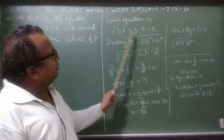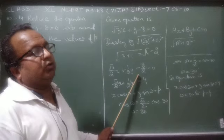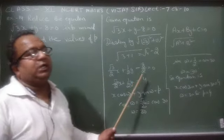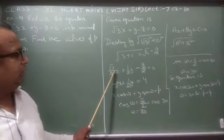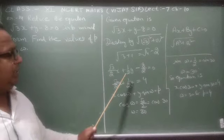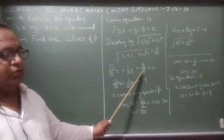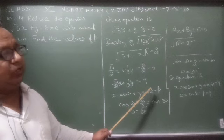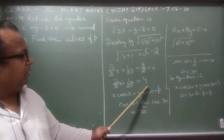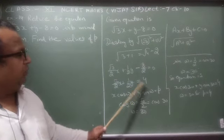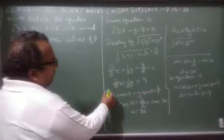हमें पूरी equation को 2 से divide करना है। ध्यान से देखो — √2 से divide करने पर -8 ÷ 2 = -4 आता है। इसको right side transfer करते हैं तो 4 आ जाता है। अब normal form से compare करते हैं।